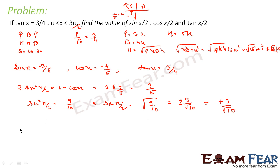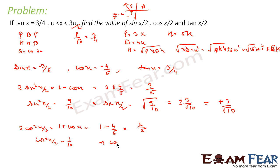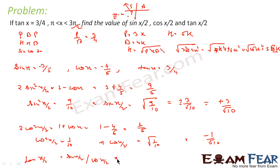For cos(x/2): 2cos²(x/2) = 1 + cos x = 1 + (−4/5) = 1/5. So cos²(x/2) = 1/10, giving cos(x/2) = ±1/√10. Since x/2 is in the second quadrant, cos is negative, so cos(x/2) = −1/√10. For tan(x/2) = sin(x/2)/cos(x/2) = (3/√10)/(−1/√10) = −3.